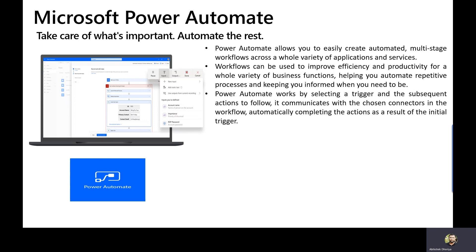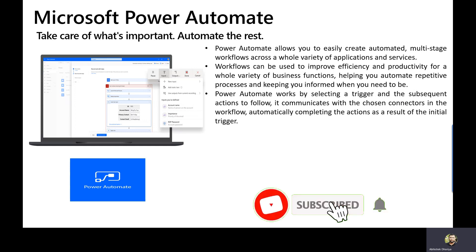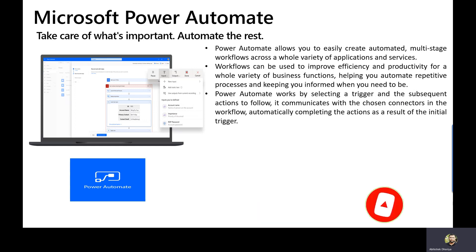Power Automate works by selecting a trigger and subsequent actions to be followed. It communicates with the chosen connector in the workflow, automatically completing the actions as a result of the initial trigger. Basically, it is a combination of a trigger, the subsequent actions you want to follow, and the connectors from where you need to pull your data.